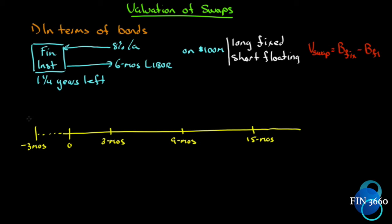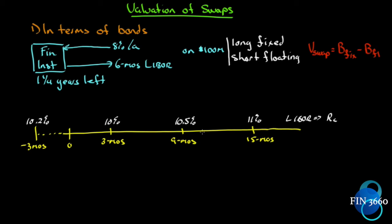We're told that LIBOR observed three months ago was 10.2%. We're also given the rates — we don't have to figure them out ourselves. The three-month rate is 10.5% and the further rate is 11%. Remember, all LIBOR rates here use continuous compounding. On our fixed rate bond, we'll value both the floating and fixed rate bonds and set up the cash flows.